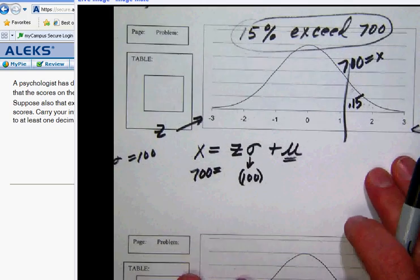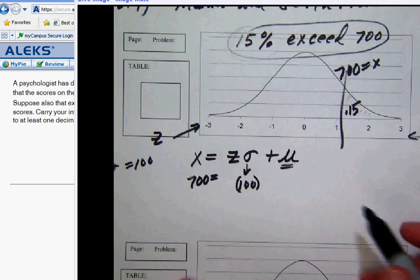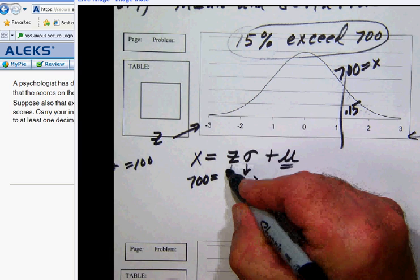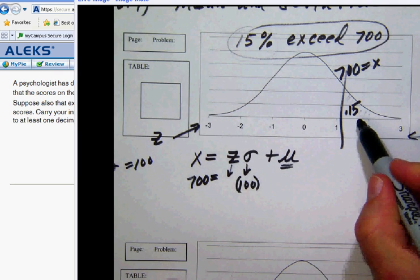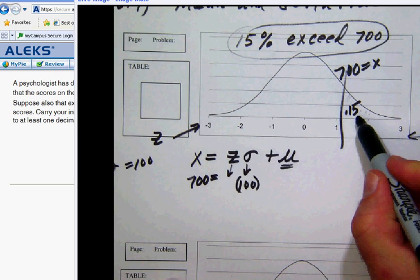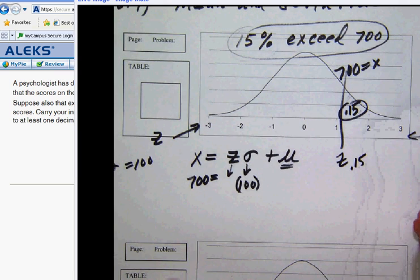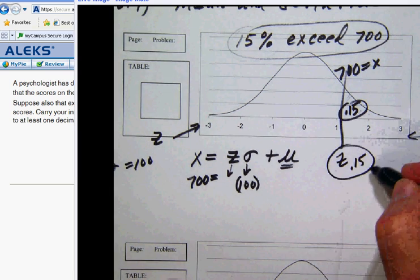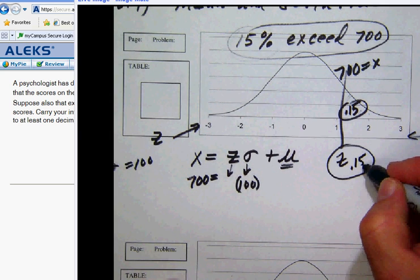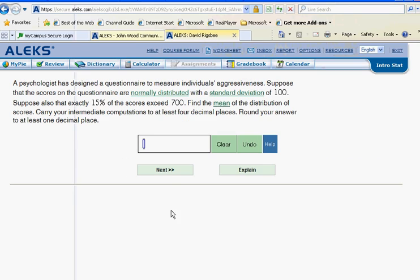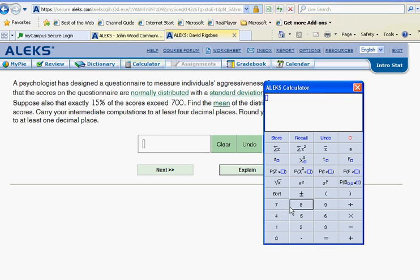We know then that our x is 700. And furthermore, this allows us a way for us to calculate this z value. Because remember, our z value here is going to be what we get from the z button. And so we can get this z value by noticing that the area to the right of our unknown z score is going to be the z of 0.15. So we can calculate that with our ALEKS calculator. Let's go do that. So we can go over here, grab our ALEKS calculator, take the z of 0.15, and we find that value.